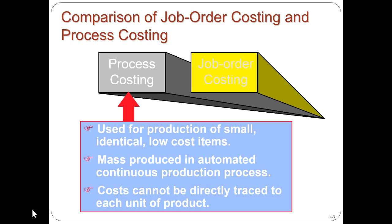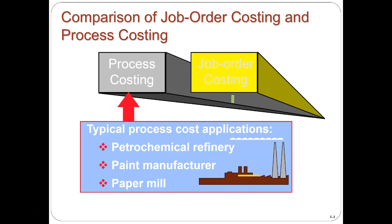For example, if we're processing petroleum, it's very difficult to apply costs to a particular unit of petroleum. Similarly, for mass-producing screws, nuts, or bolts, it's too costly to pin the price down to one particular unit. Typical process cost applications include petroleum refineries, paint manufacturing, and paper mills — all involving very continuous types of production.